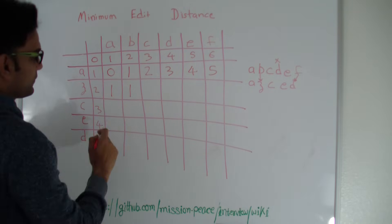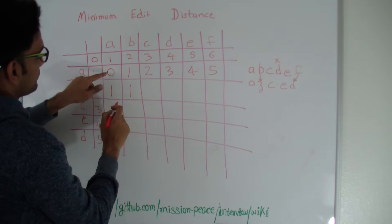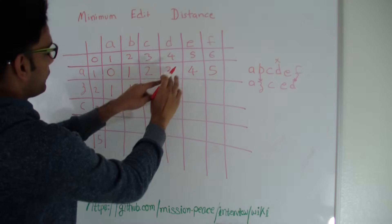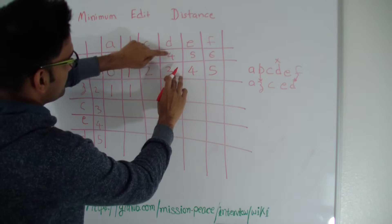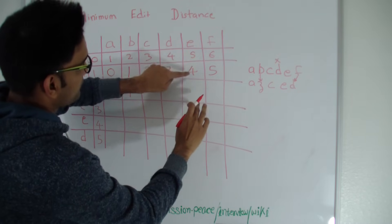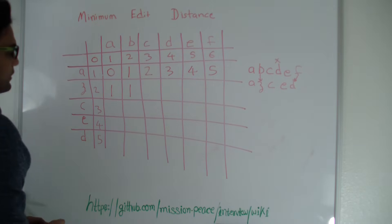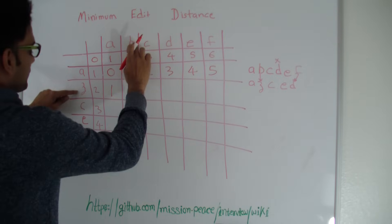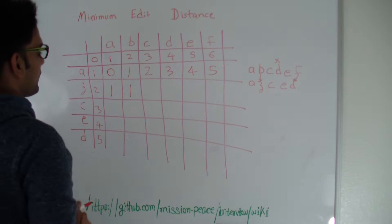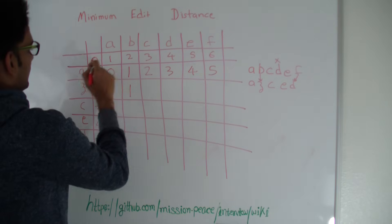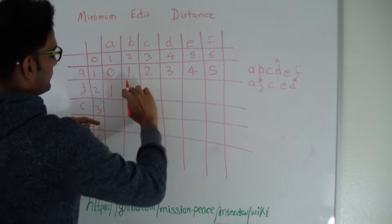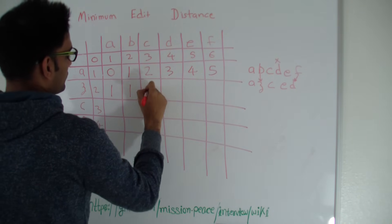The minimum of the three: in this case it's zero, so zero plus one is one — that's how we came up with all these numbers. Minimum of three is two plus one, three; three plus one, four; four plus one, five. At all locations where the characters are different, you use this technique: take the minimum of the three plus one. For example, if the string is ABC and AZ, since Z and C are different, minimum of the three plus one gives two. Since Z and D are different, minimum of the three plus one gives three. Z and E are different, so four and five.